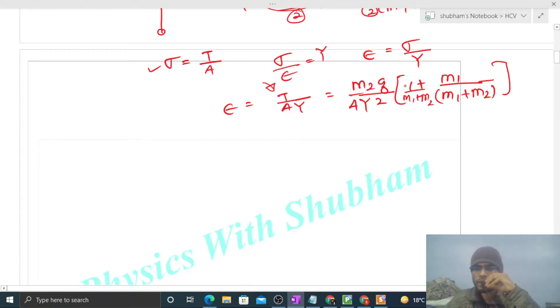Let's simplify this. Taking LCM, we get m1 plus m2 in numerator and denominator. This becomes twice of m1 plus m2 divided by m1 plus m2, multiplied by m2g divided by A and Y. The two comes out. So this is the value of strain in the string.